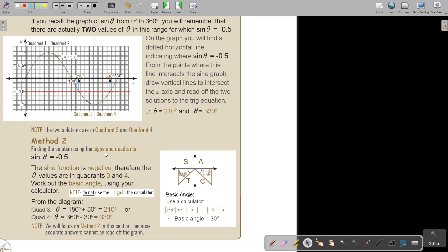Finding the solution using the signs of the quadrants. The sine function is negative, therefore the θ values are in quadrants three and four. Work out the basic angle using your calculator. Do not use the negative sign in the calculator. Just press shift, sin, 0.5.